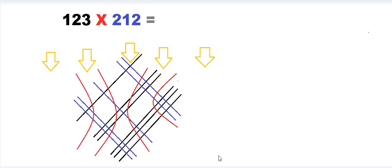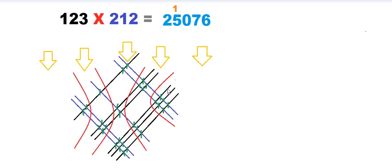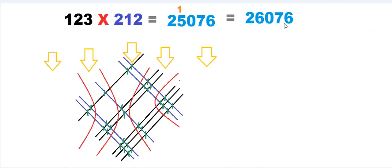In the first region we have six points, so we write six. In the second region we have seven points, so we write seven. In the third region we have ten points, so we write zero and carry one forward. In the fourth region we have five points, so we write five. In the last region we have two points, so we write two. After adding the carry, the final answer is 26076. This is all for today.